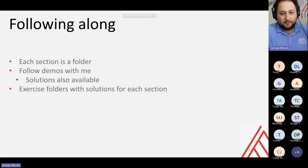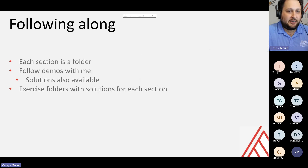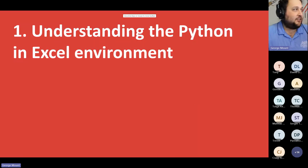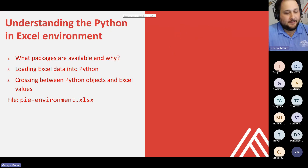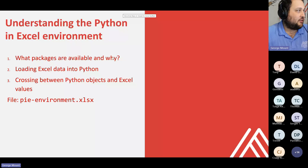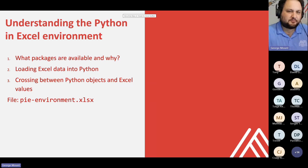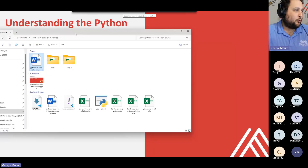We're probably not going to get to everything today — we are recording this. I've basically broken this down into three sections. First, we're going to understand the rules of the game in terms of how Python works in Excel. Then we're going to understand what packages are in Python. Then we're going to look at getting Excel data into Python, and crossing the path between how Excel works with data and how Python works with data. Let's go ahead and move into this Python in Excel environment workbook.